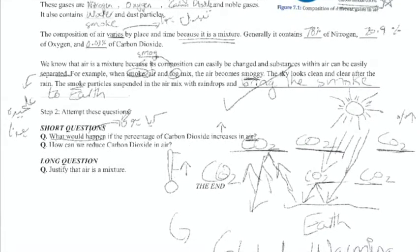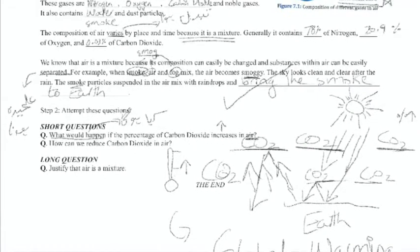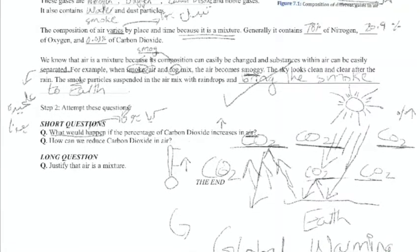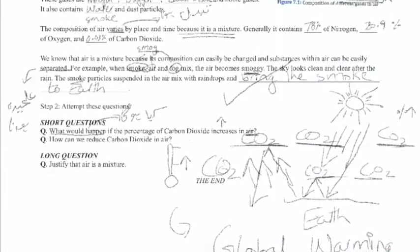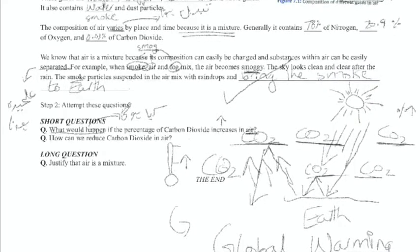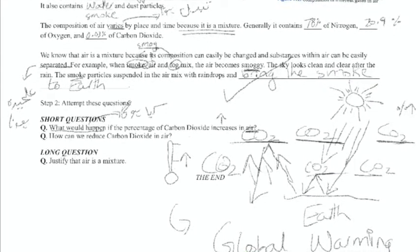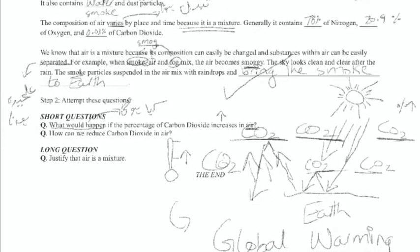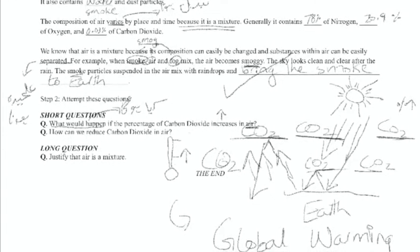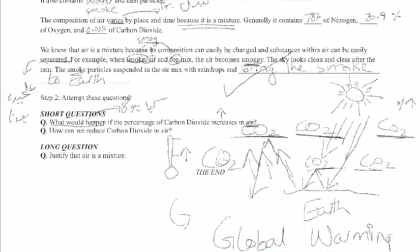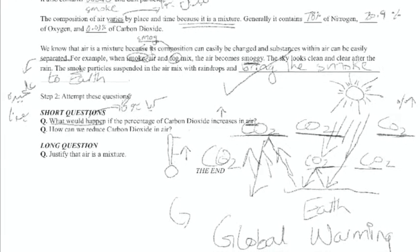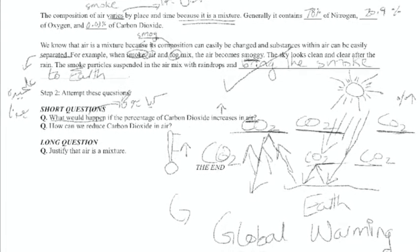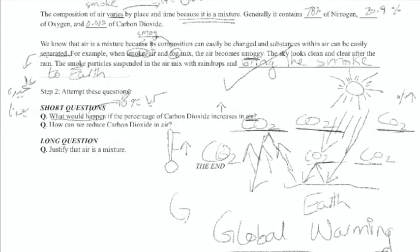When the percentage of carbon dioxide increases in air, it becomes difficult for the hot rays of the sun to escape the atmosphere. Escape is spelled E-S-C-A-P-E.